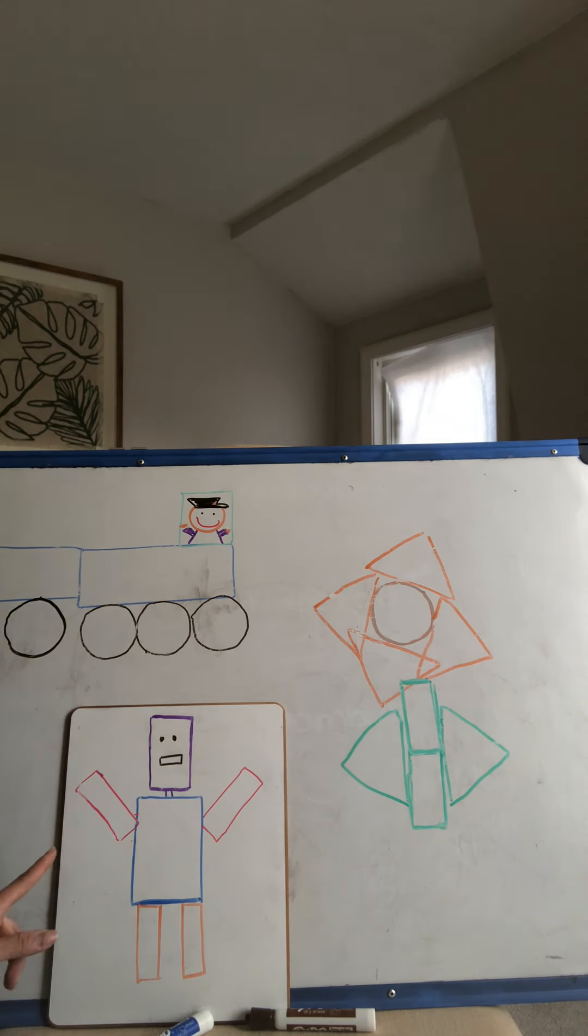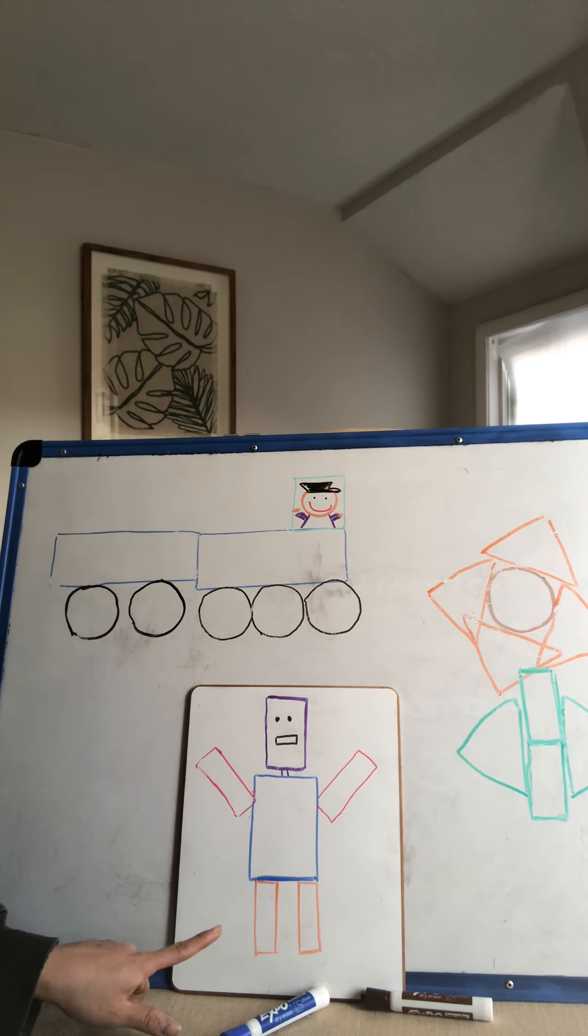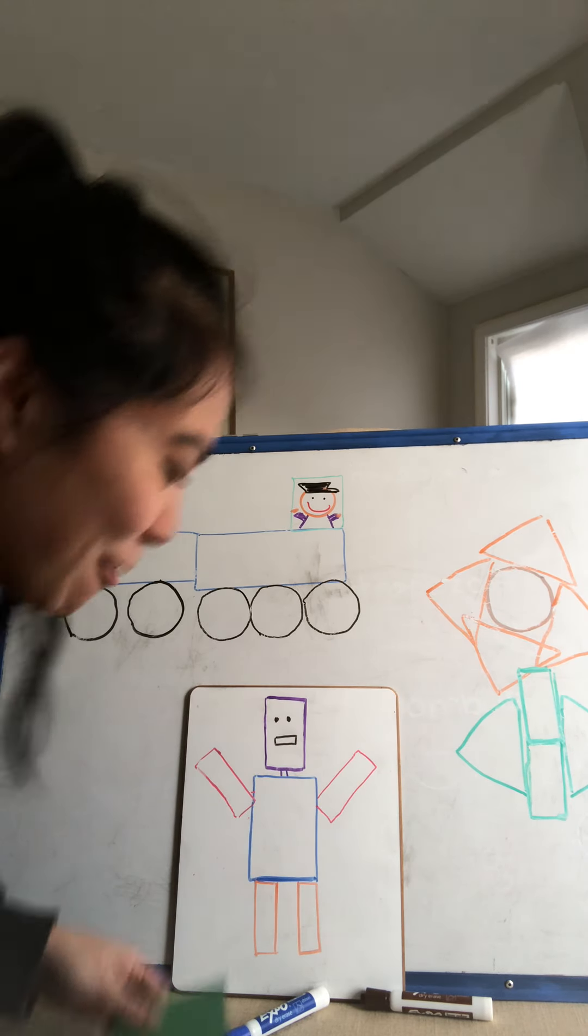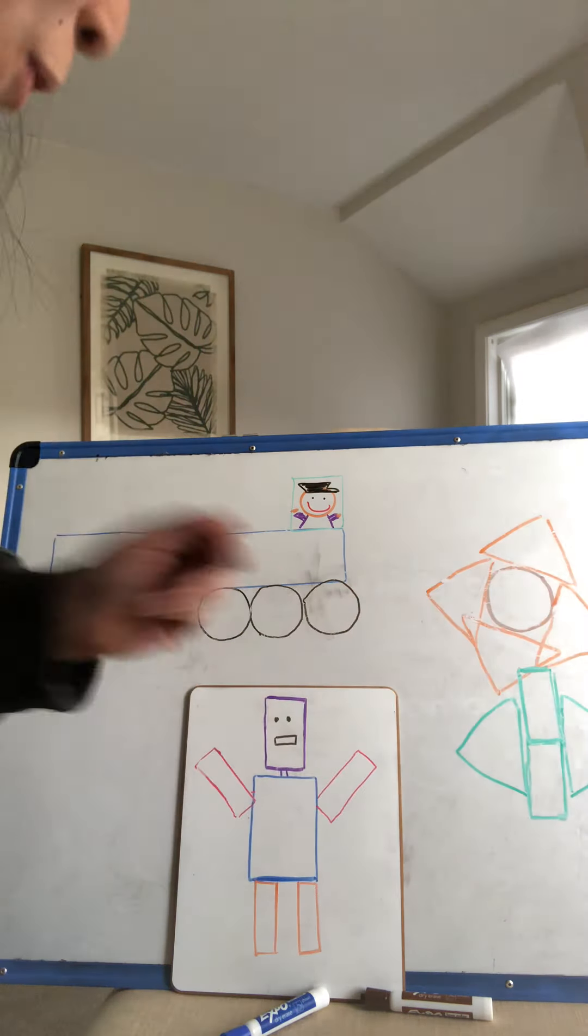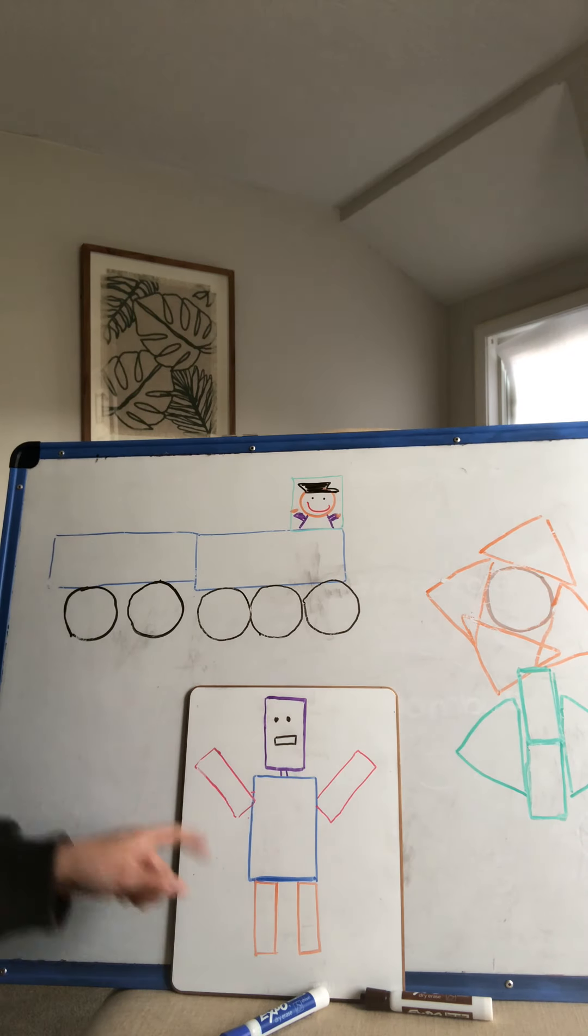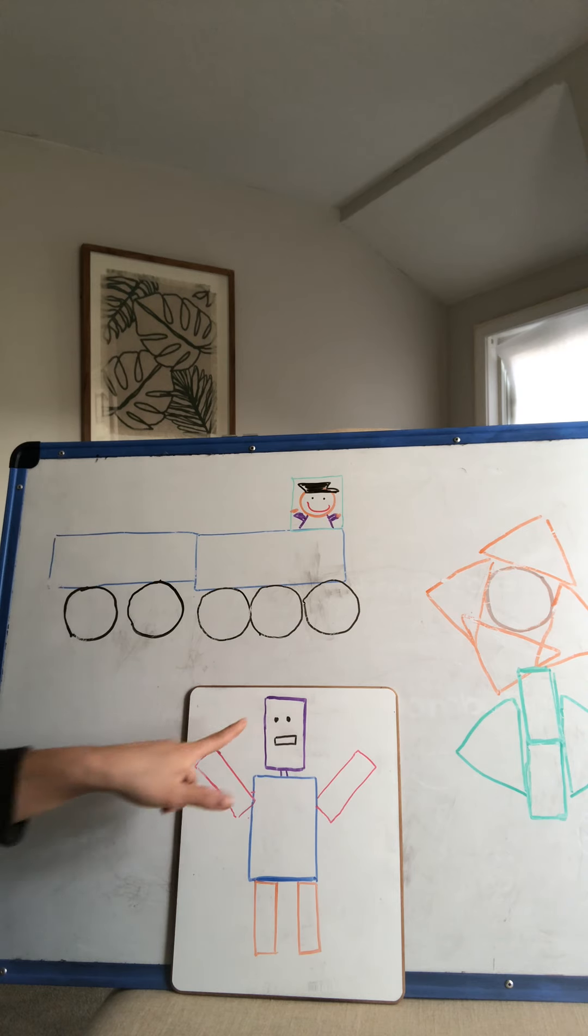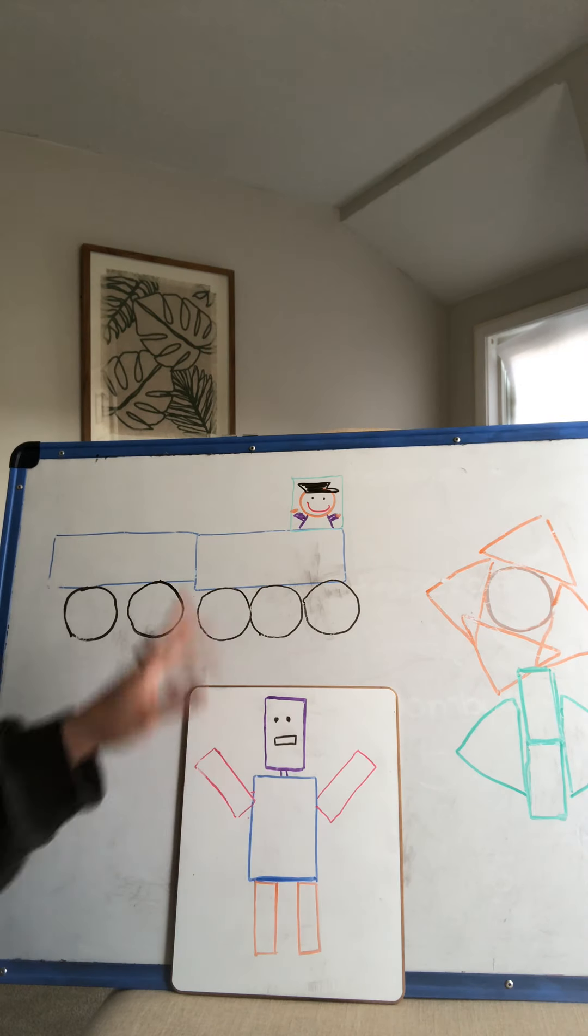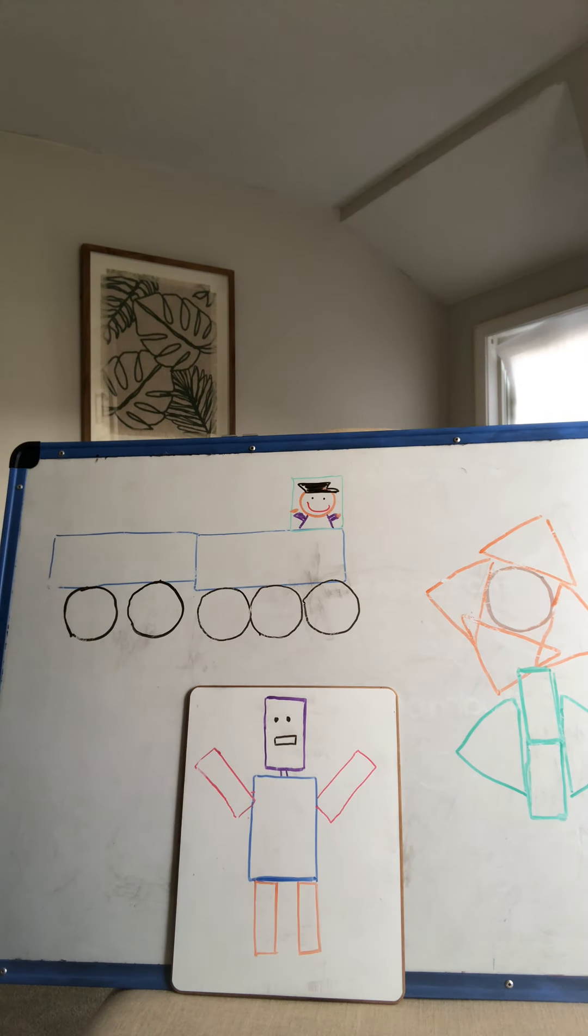And then my last picture I made is a, what is this? A robot. That's right. And I only used one shape for my robot. And what shape is that? A rectangle. Now I just used it for his head, for his body, his legs, and I made him dancing. He's a dancing robot. All right.